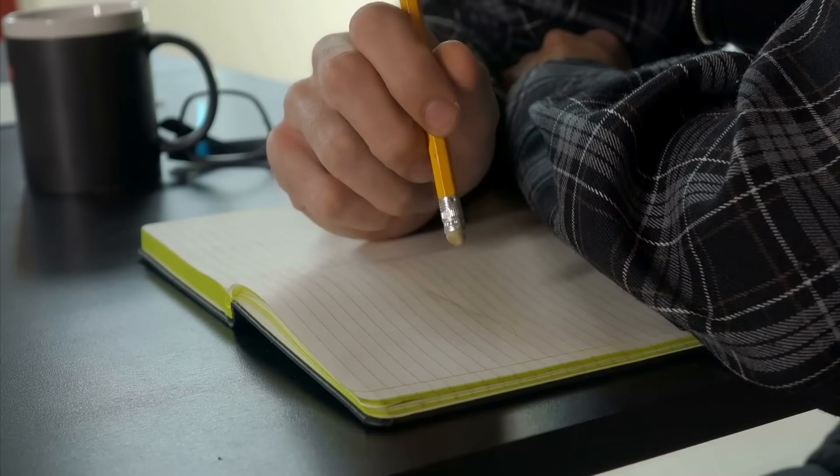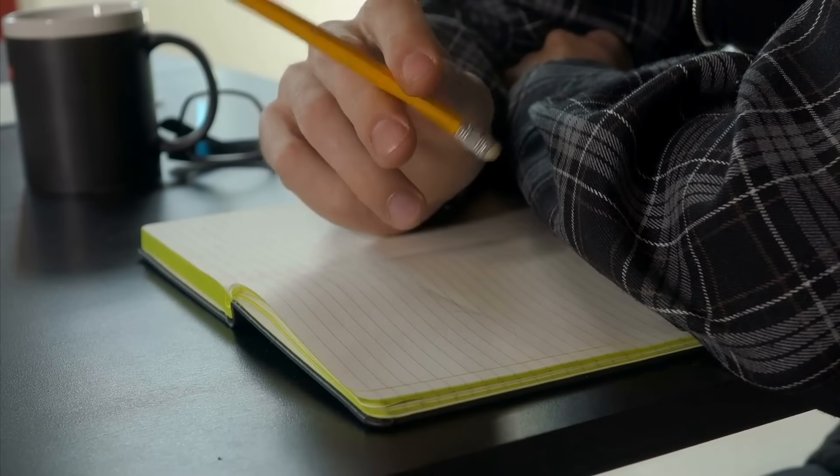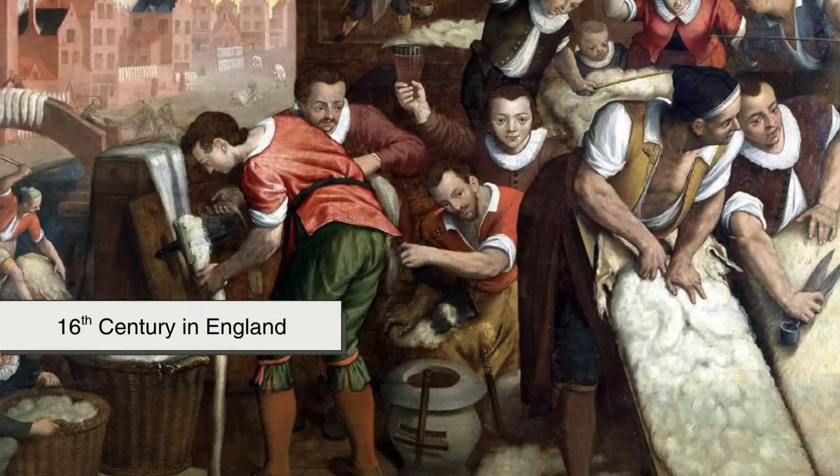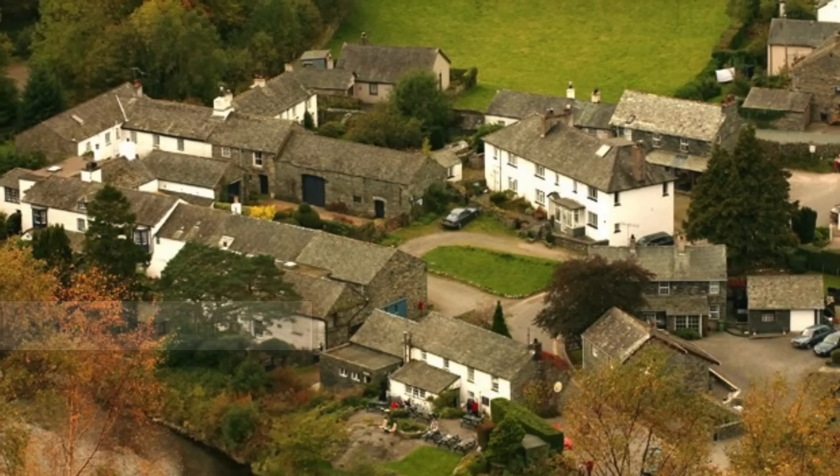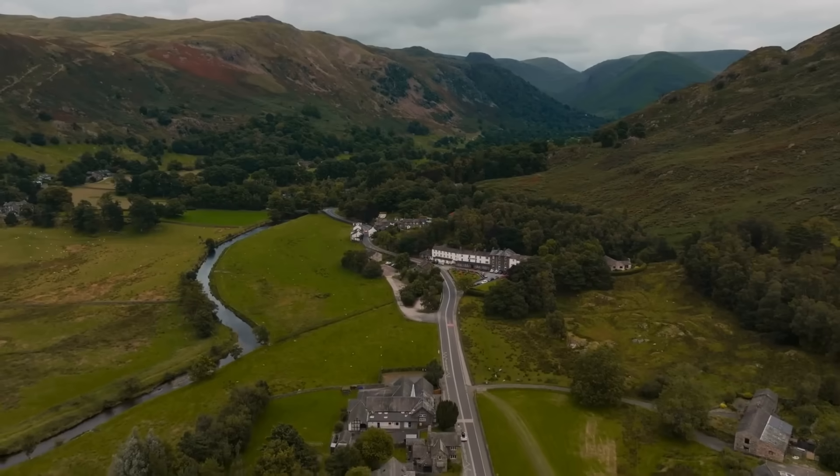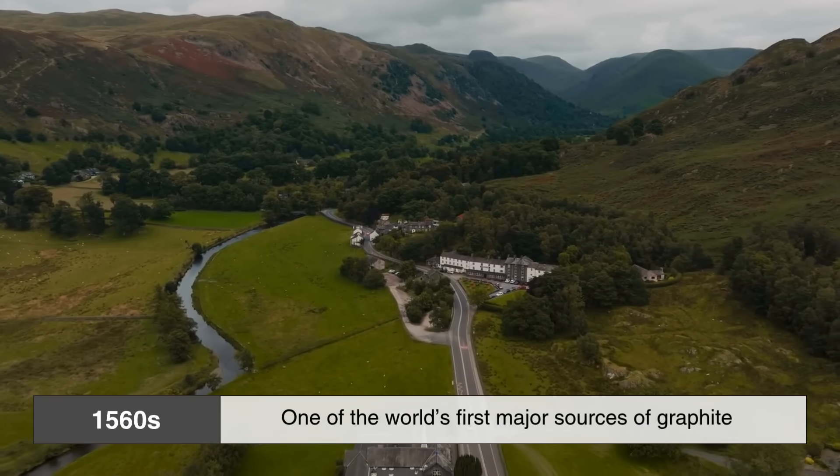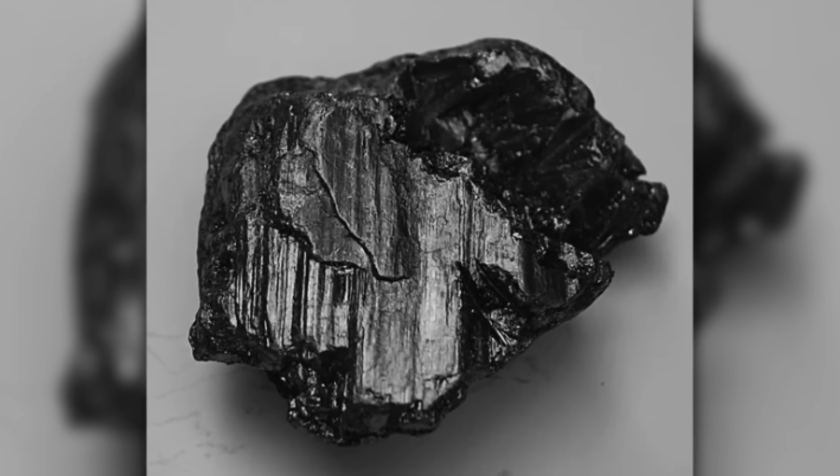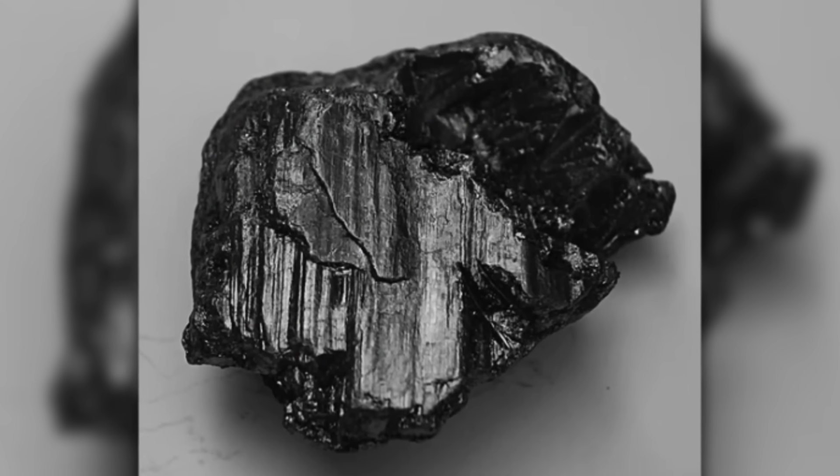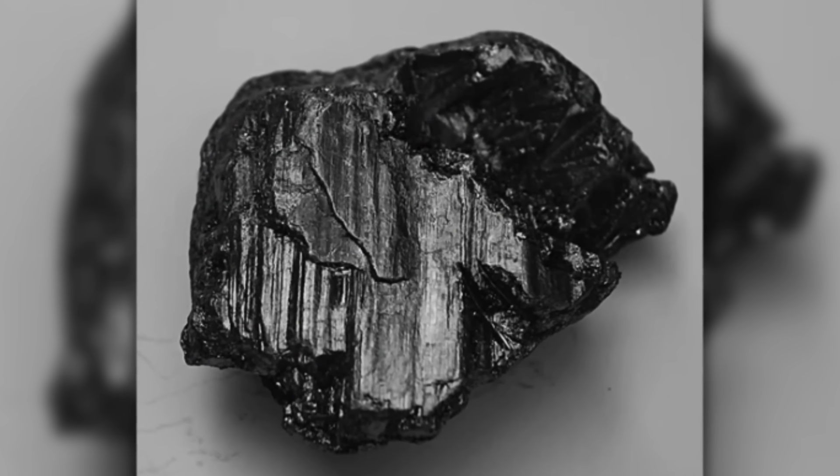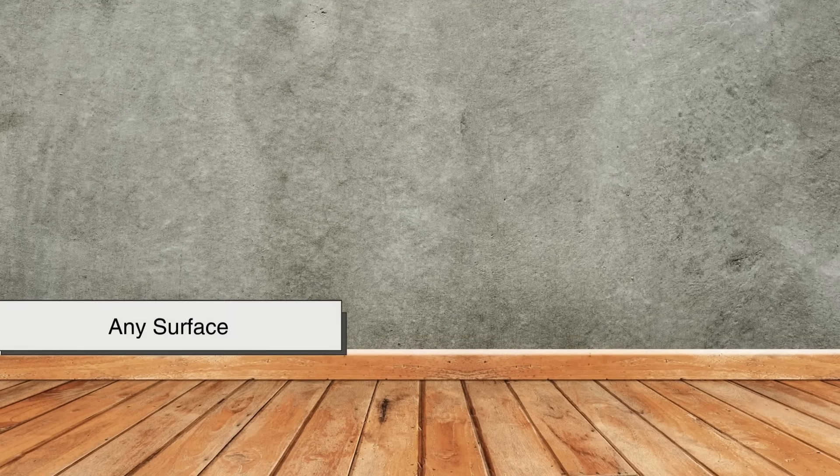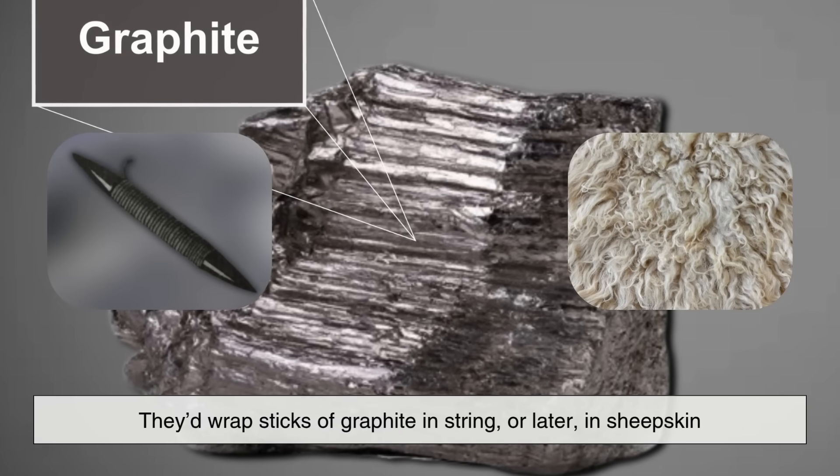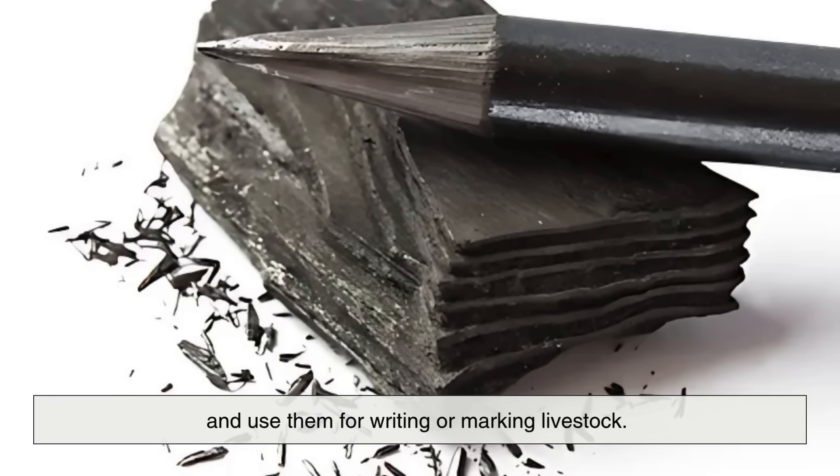To really understand how we arrived at the modern hexagonal pencil, we have to go back a few centuries. The story begins in the 16th century in England, in a small town called Borrowdale in Cumbria. Around the 1560s, one of the world's first major sources of graphite was discovered here. The locals quickly realized that this dark, soft substance could leave marks on paper, wood, or just about any surface. They'd wrap sticks of graphite in string, or later in sheepskin, and use them for writing or marking livestock.